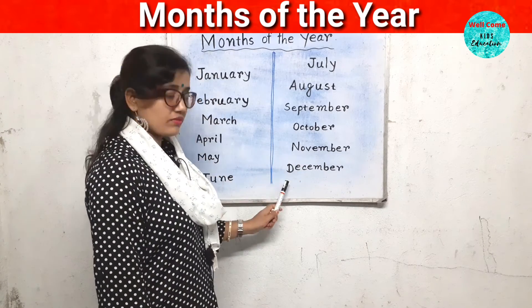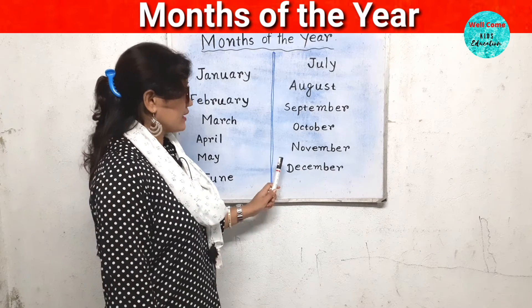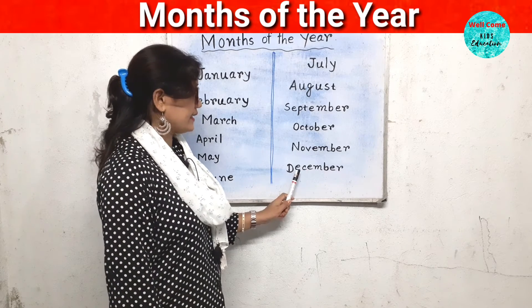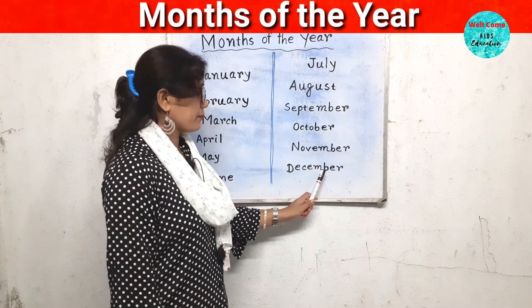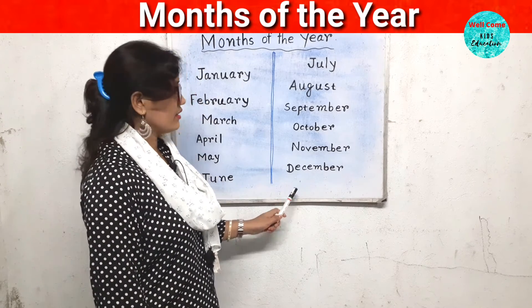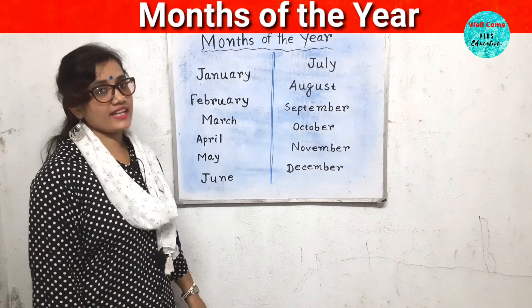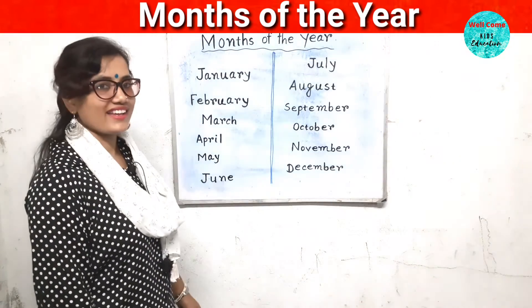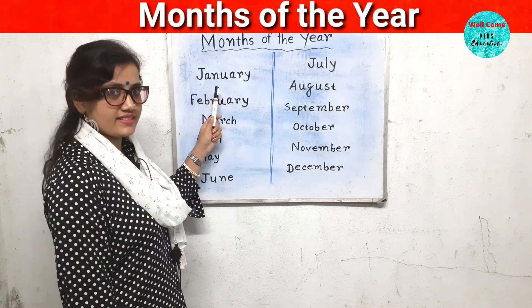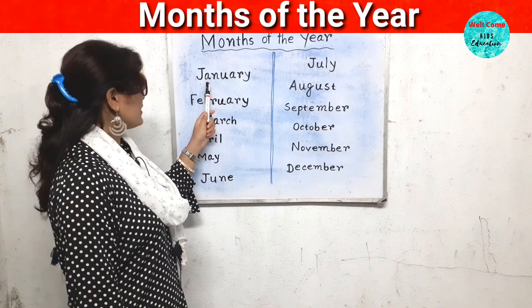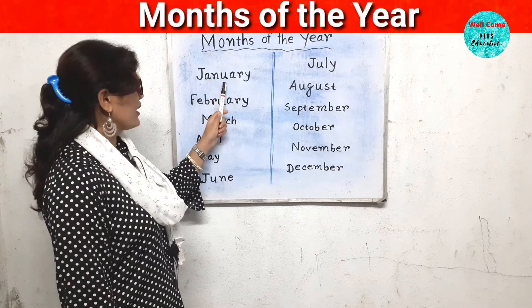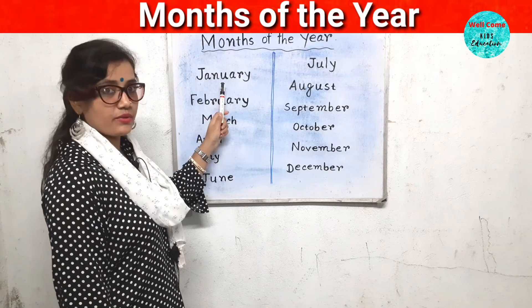The twelfth month is December. D-E-C-E-M-B-E-R. December. Let's see once again. The first month is January. J-A-N-U-A-R-Y. January.